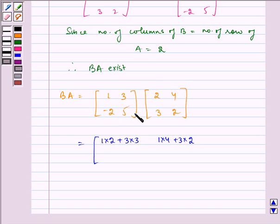Now, multiplying second row of B by first column of A, so we get minus 2 into 2 plus 5 into 3. Now, second row by second column, so minus 2 into 4 plus 5 into 2.